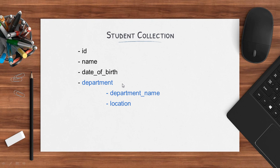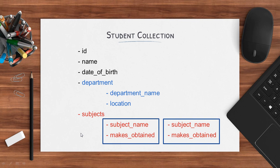MongoDB stores each document in the format of JSON, so each document will look like JSON — these are the fields of the JSON. We can have an array as well. For example, a student is learning subjects, so here this is an array, and this is an array of sub-documents. This is one sub-document — the subject sub-document — which has its own set of fields: subject name and marks obtained. Here is another sub-document, and you can have many because this is an array.